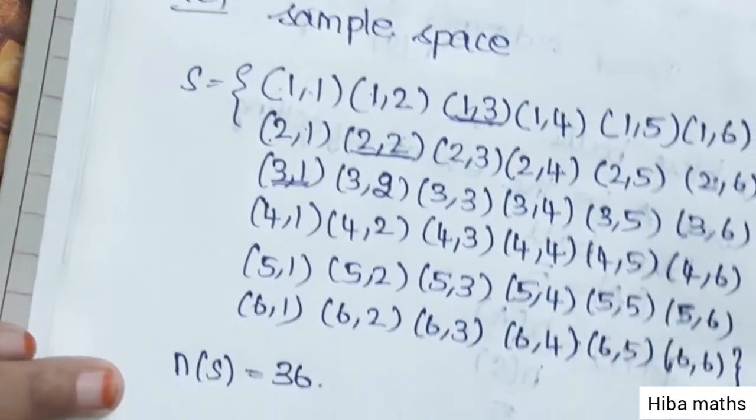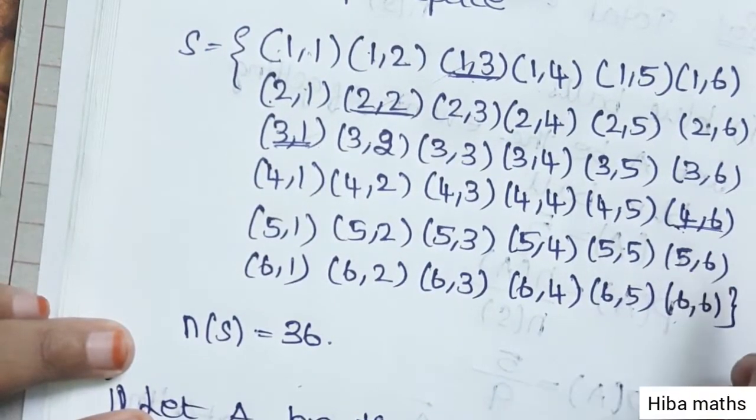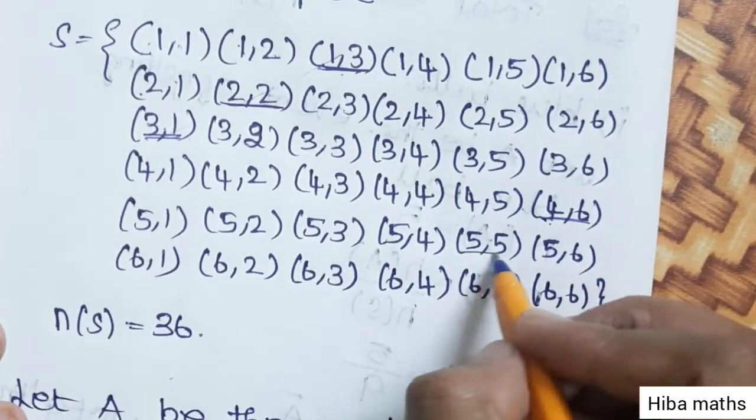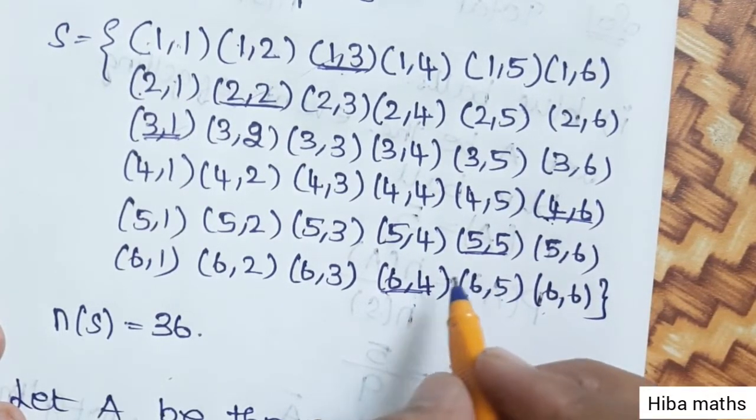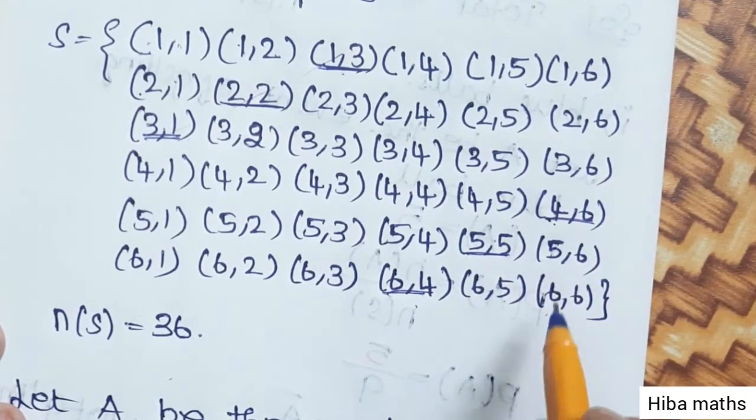Looking at the sample space: 4 plus 6 adds to 10, 5 plus 5 is 10, 6 plus 4 is 10. But the question asks for greater than 10.